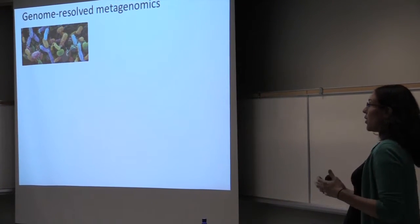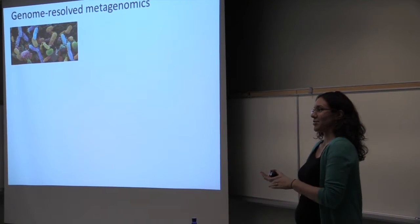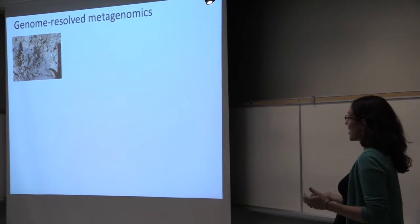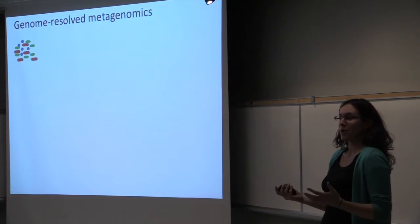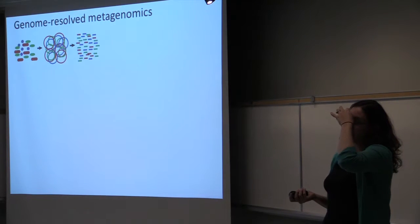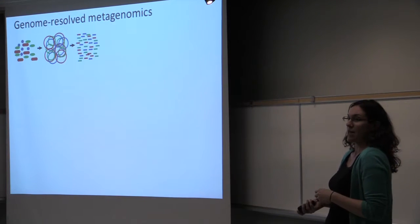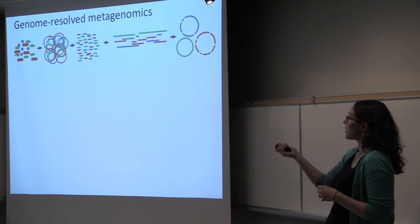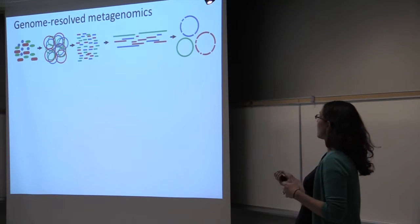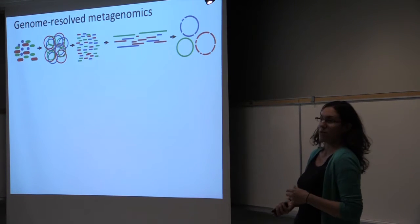When talking about genome-resolved metagenomics, you start with a microbial community — this is a colorized image of a microbial biofilm growing on your tongue. That can be sediment, which are the samples I'm going to be talking about, or really any microbial community. You take the total microbial community, extract all of the DNA, then sequence it. This gives you a baseline understanding of every community.